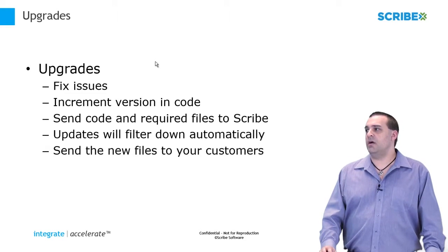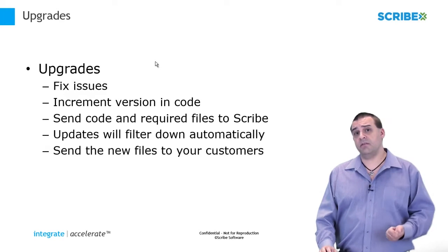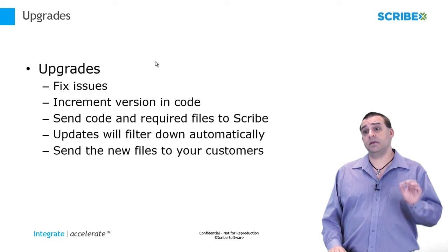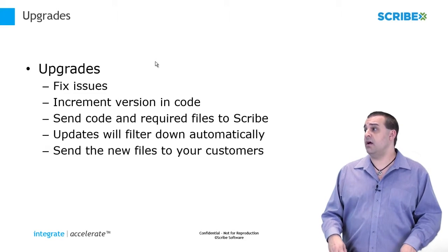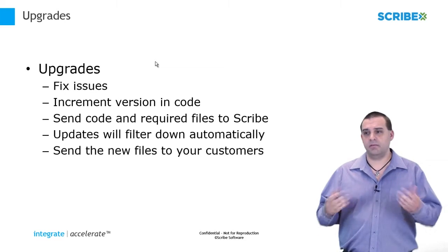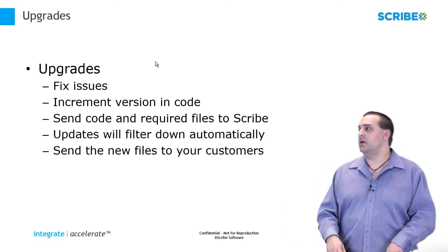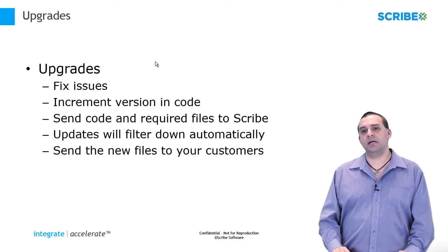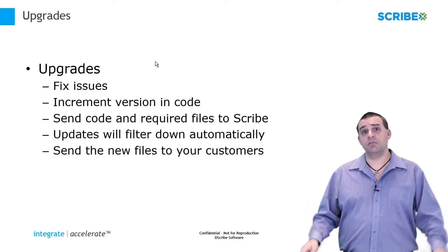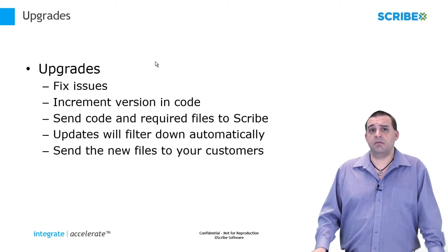We really don't have to do a major code review this time around. We'll ask you to fix the issues or upgrade the features within your code, increment the version number — we've already discussed that — and then send all of the same required files to Scribe. Ideally there will be two zip files: one with source code, one with the files and logos. Once we put those up in the cloud, the updates will filter down automatically and your customers will be working on the new code with access to the new entities and features.